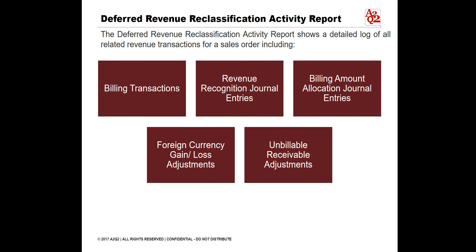Billing Transactions, Revenue Recognition Journal Entries, Billing Amount Allocation Journal Entries, Foreign Currency Gain Loss Adjustments, and Unbillable Receivable Adjustments are detailed logs of all related revenue transactions for a sales order in Deferred Revenue Reclassification Activity Reports.